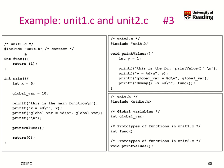Why do we include the header in both files? We use both because we want to ensure that the definition of the function, for instance, has the same prototype as the usage. It's really a good idea to always use a header file in both the implementation and the usage. Also, if we want to set global_var to a value, we could have done so in unit1.c and then the compiler would have automatically used that initialization value.